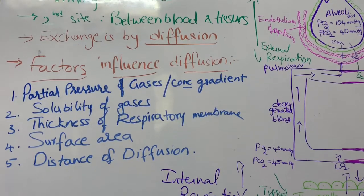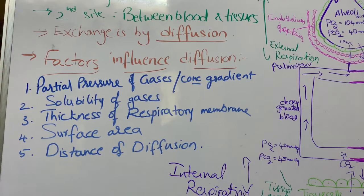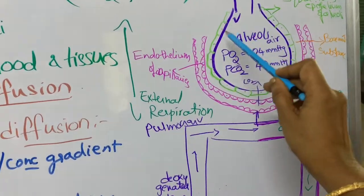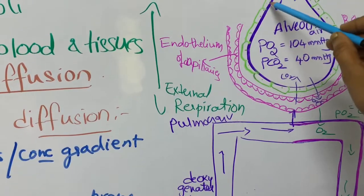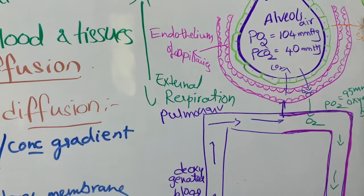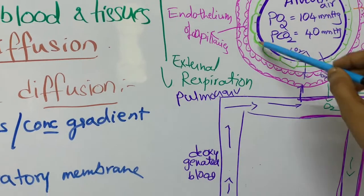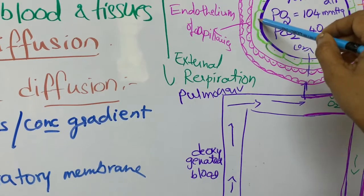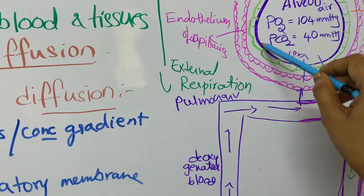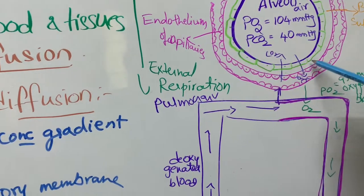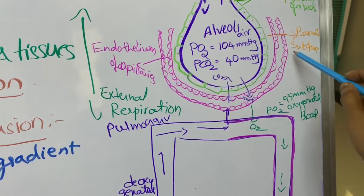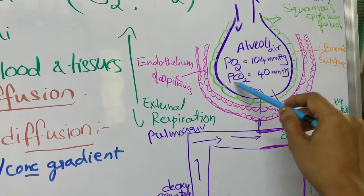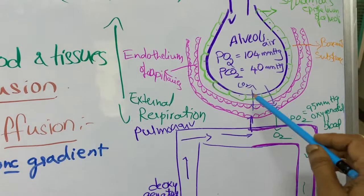We are interested only in oxygen and carbon dioxide. The alveolus is a sac-like structure consisting of a single layer of squamous epithelial cells, and each alveolus is surrounded by blood capillaries. Each blood capillary consists of an endothelium. The space between the alveolar wall and the capillary endothelium is known as the basement substance.